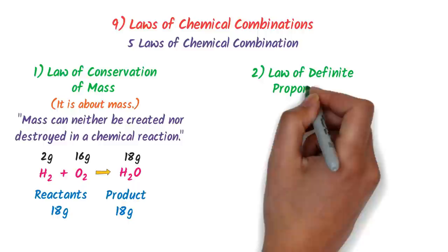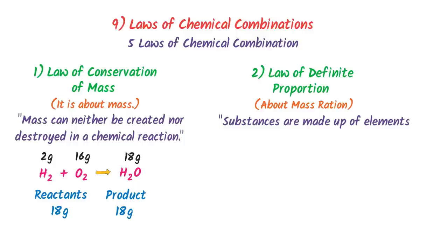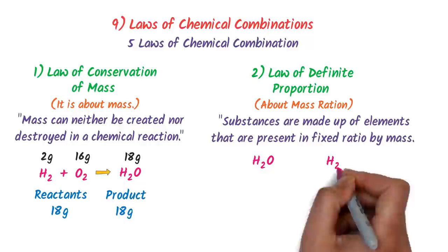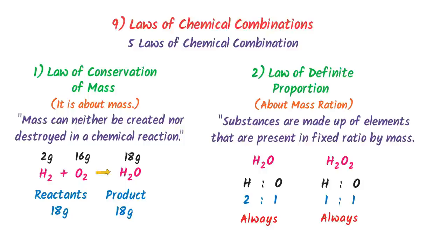The second law is the law of definite proportion. It states that chemical substances are made up of elements present in a fixed ratio by mass. For example, in water the ratio of hydrogen to oxygen is 2:1, while in hydrogen peroxide it is 1:1. The ratio in each compound is always fixed, so chemical substances combine in a fixed ratio by mass.